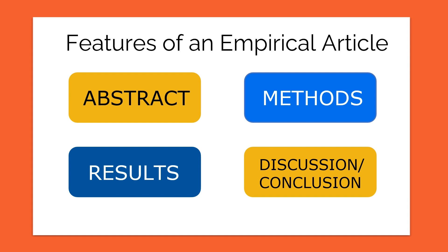The first place we recommend checking is the abstract. The abstract can be found at the beginning of the article. It is a summary of the information in the article, and it's usually about one paragraph long. If you read the abstract, you will often be able to identify whether or not research was done for the article. The abstract will often mention how the research was conducted, the results of the research, and may even use terms like 'methods' or 'results.'